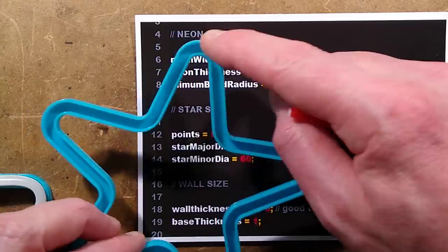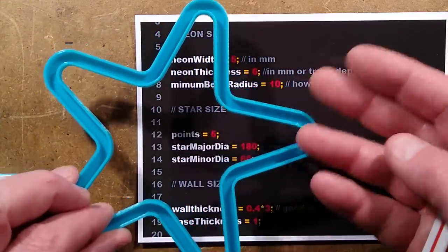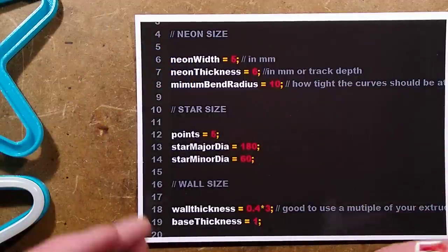And then you've got major diameter which is the outer diameter and you've got minor diameter which is the inner diameter. Experiment, play, adjust, look for what you actually want to achieve.